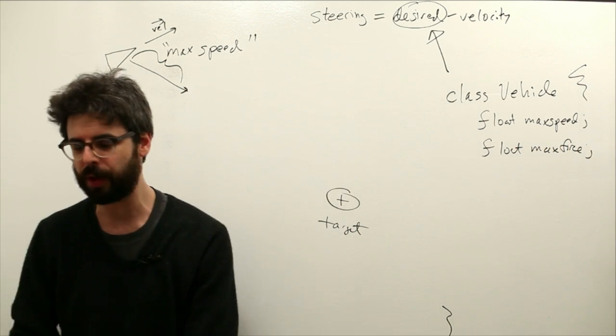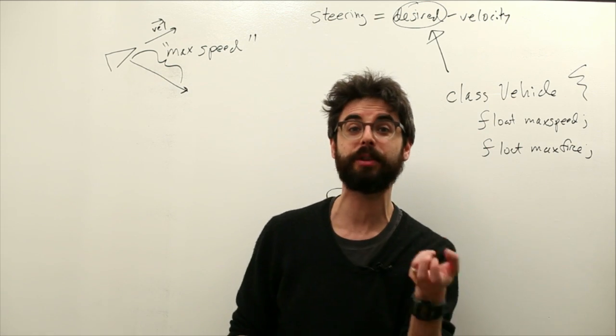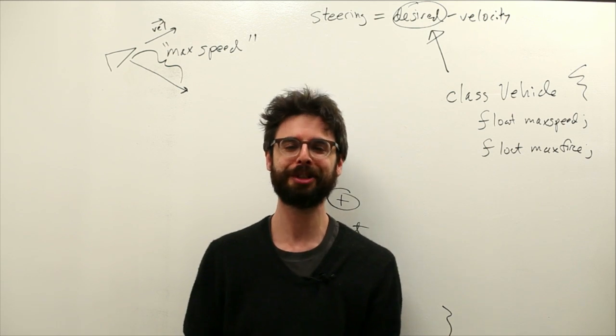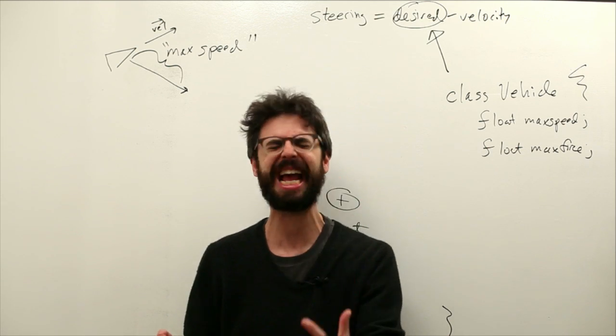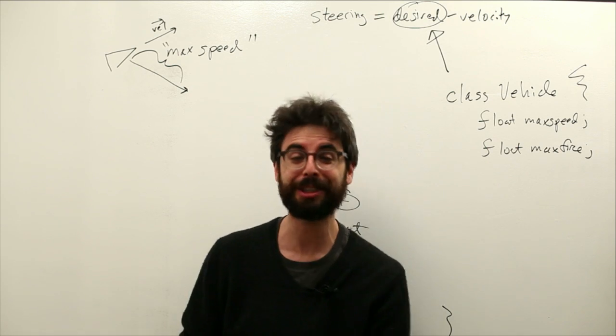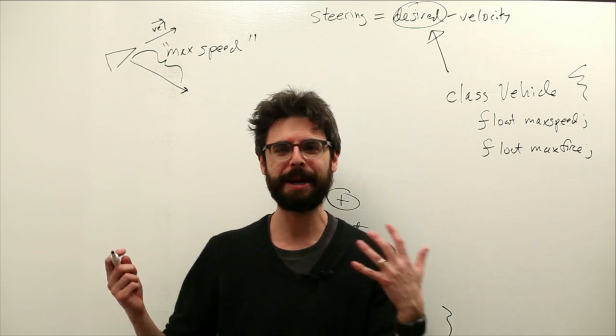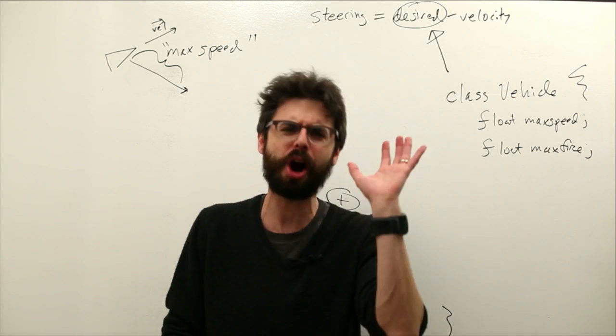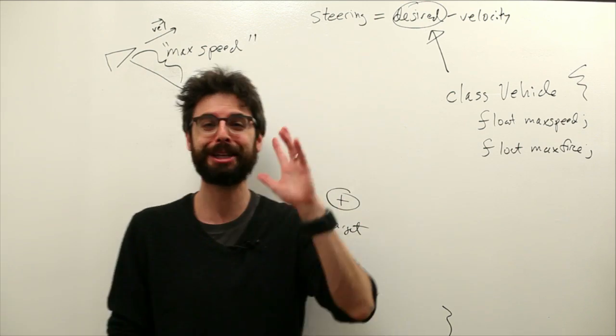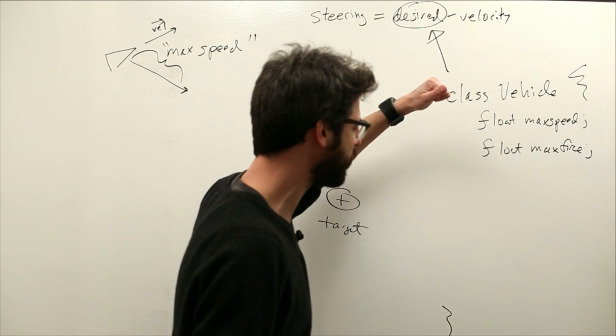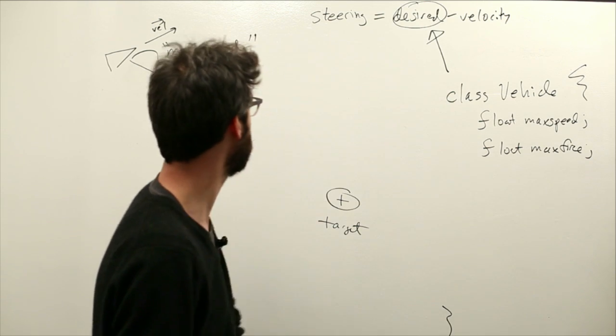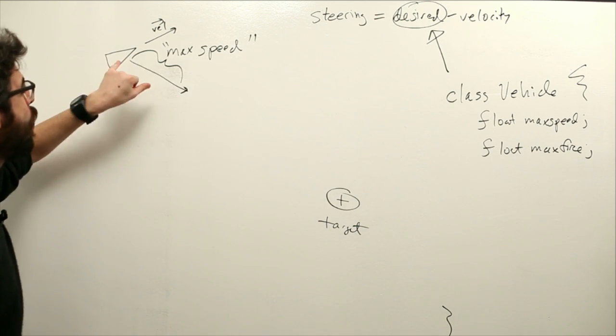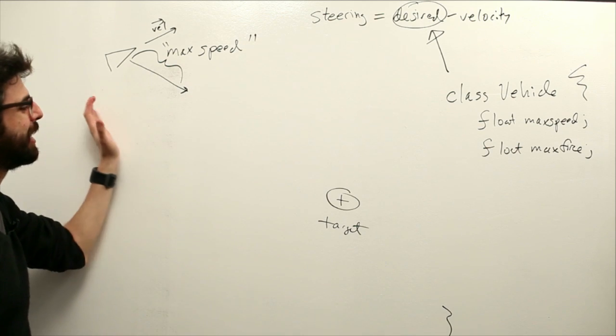But we're going to add two new parameters to our vehicles. One is maximum speed. And one is, another one is maximum force. So this is useful. These parameters, these values, are going to allow us to really tweak the behavior of our system. So maximum speed, you can think of it as a top speed, like how fast is this thing able to go? Is it a race car versus a truck? Same with maximum force is like, how good is it at turning? What's its handling? A car racing example is a perfect scenario for this.